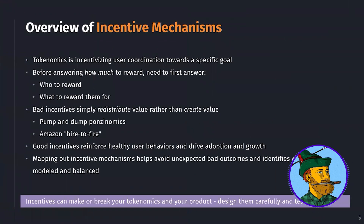Before we dive into incentive mechanisms — one of the most fascinating pieces of tokenomics and the tokenomics design canvas — let's talk about a brief overview. Tokenomics is really a way of incentivizing user behavior towards a specific goal. Before we answer how much we want to reward users to achieve a goal or perform a task, we need to first answer: who do we reward, and what do we reward them for?